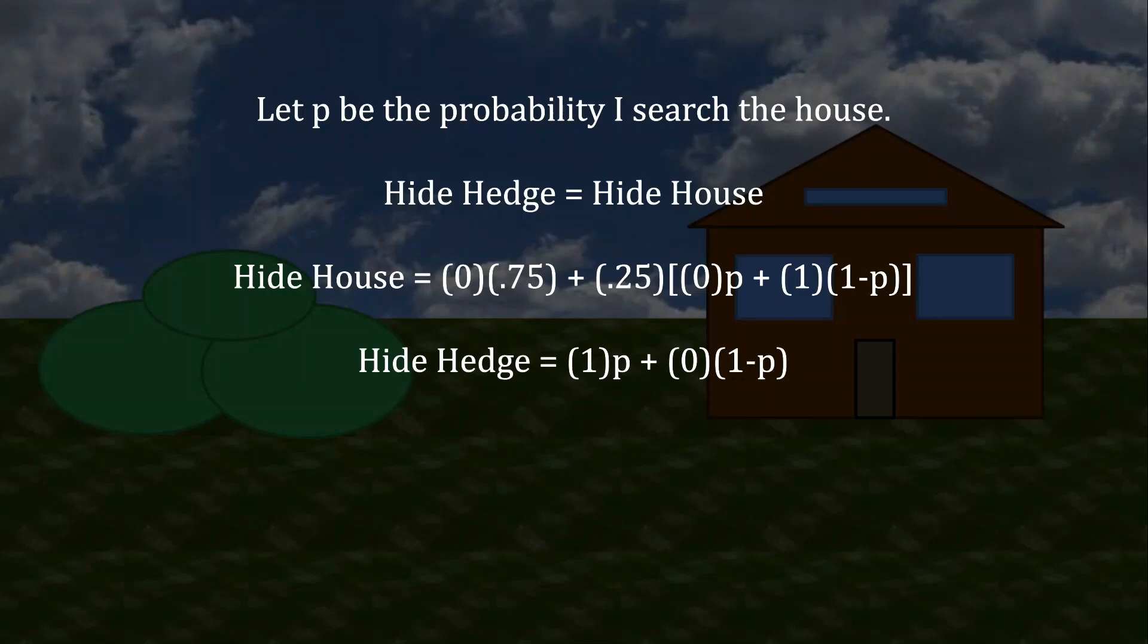Your payoff for hiding behind the hedge is much simpler because we do not have to worry about the light turning on. Instead, you'll win whatever portion of the time that I've searched behind the house, which is probability P. That's why you're getting a 1 there. And then the remaining 1-P portion of the time I'm searching behind the hedge, and I'm catching you, so you're winning nothing.